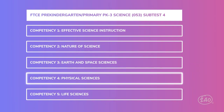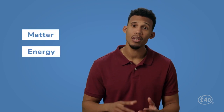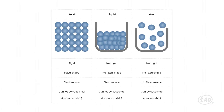Next up is physical science — competency 4. You'll need to know the basics about matter, energy, and force. In the matter section, you'll need to know about the states of matter — solids, liquids, and gases — and the properties of each. You'll also need to know the physical and chemical changes of matter, like when an ice cube melts or a candle burns, and how to classify matter into elements, compounds, and mixtures.